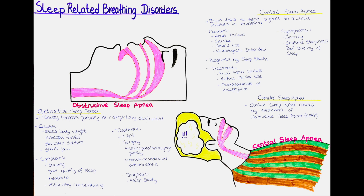In severe cases of central sleep apnea, supplemental oxygen or non-invasive ventilation may be recommended. In rare cases, a pacemaker-like device may be implanted to stimulate breathing during sleep. However, these treatments are typically reserved for people with severe central sleep apnea who have not responded to other treatments.